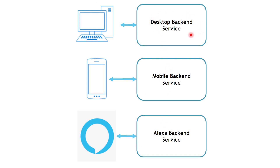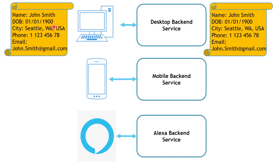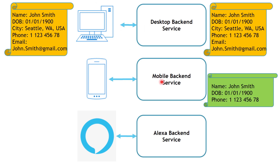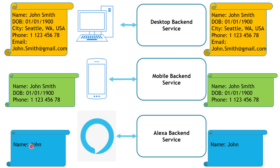The desktop backend service is going to return the full profile details — exactly what's required to be displayed on the desktop frontend. The mobile backend service is going to return the amount of information exactly required by the mobile frontend. The Alexa backend service is going to return just the first name required for the Alexa skill frontend. Now if we decide to make a change on the Alexa display and add more fields, we can update the Alexa backend service without worrying about disturbing other frontends. This is the true value of the Backends for Frontends pattern.